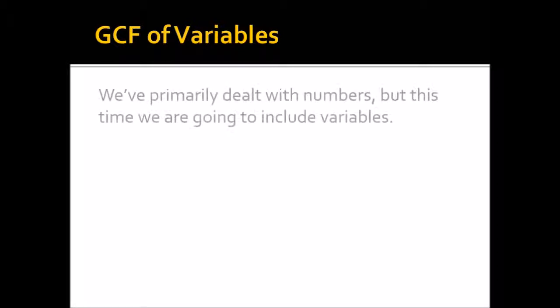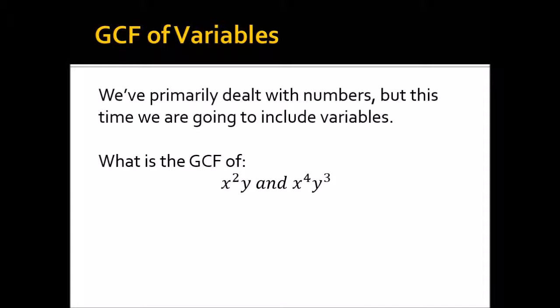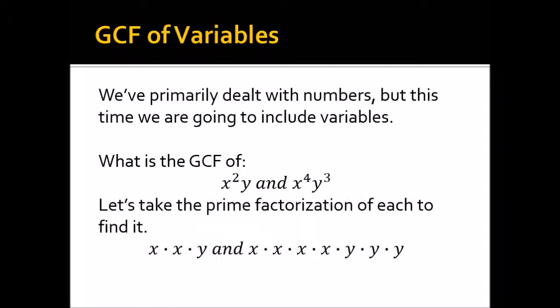So let's take this approach and apply this to variables now. So let's say that we have x²y and x⁴y³. So we have something really weird and complicated like that. Well, let's break those two variables into their prime factorization. So the prime factorization of x²y is x·x·y. And the prime factorization of x⁴y³ is x·x·x·x·y·y·y. Now let's try and find the greatest amount of matches that we can find.